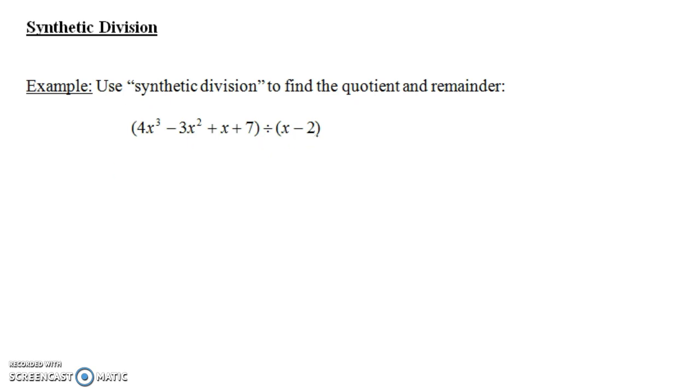But synthetic division, what you do is, first of all, say, what's the zero of this thing that we're dividing by? And notice it's 2. 2 is the thing that you could plug in here to give us 0. So, we're going to put 2 over here. Notice we're not putting minus 2, we're putting 2. And then we're going to look at the coefficients of this polynomial here. It's 4, minus 3, 1, and 7. We're going to put those along the top row there.